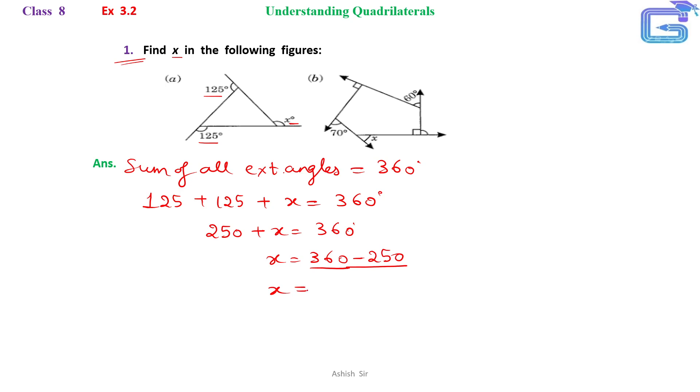You will get x equals to 110 degrees. This is the unknown exterior angle of the polygon.